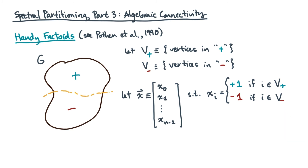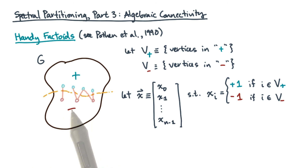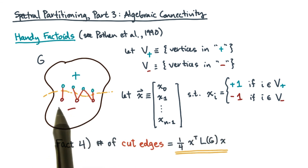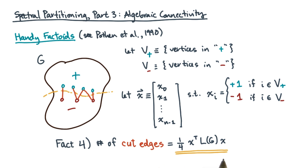Now suppose you want to count the number of edges that are being cut in the graph. This leads us to our fourth fact: the number of cut edges is one-fourth times x transpose times L times x. This fact is also very nice — it says that if you want to minimize edge cuts, you should try minimizing this product.